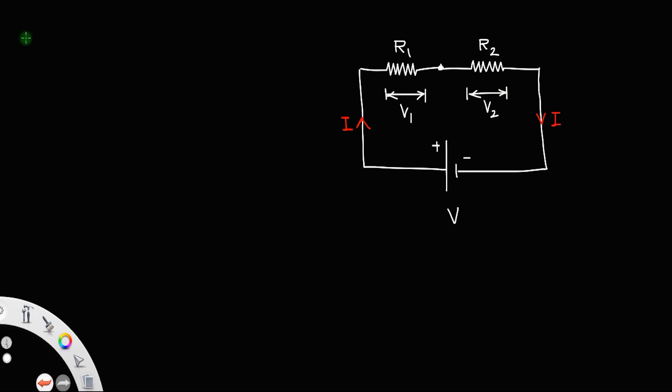We have applied voltage that is equal to V, the voltage of the cell, will be the sum of the voltage drop across the resistors that is V1 plus V2.